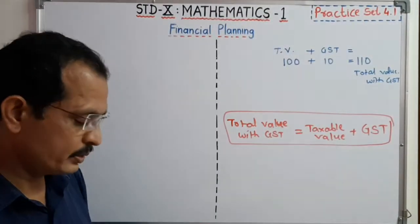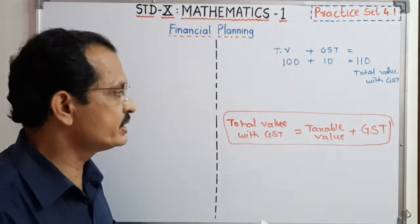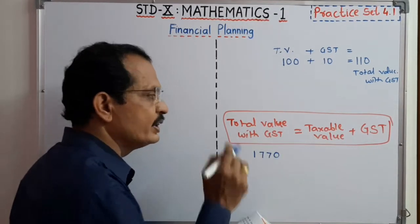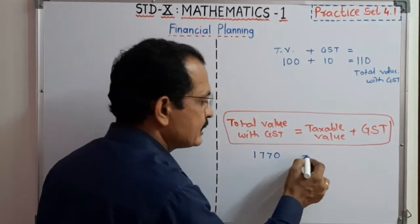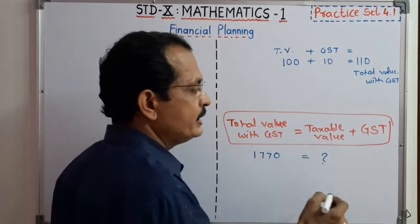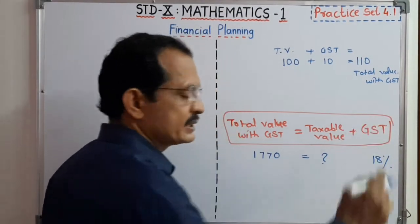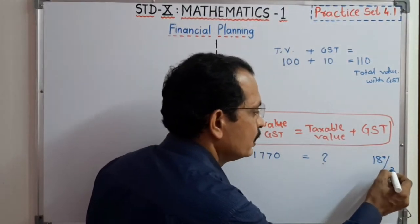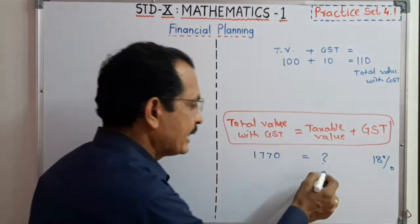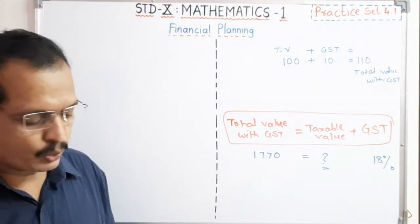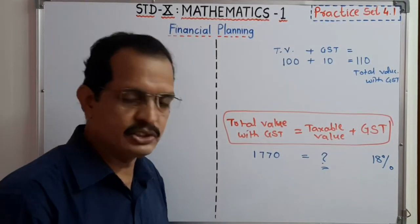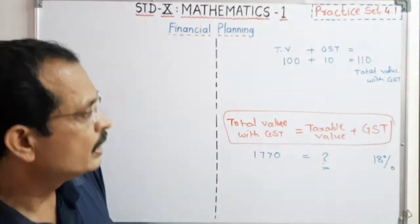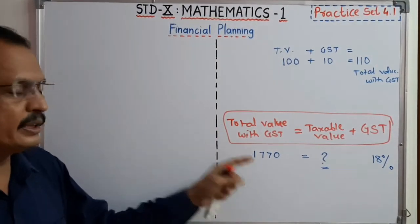What is given? The total value with GST is ₹1770, and we have to find the taxable value. The GST rate is 18%, and we have to find the taxable value, then CGST and SGST. All of you know that CGST and SGST will be the same amount. If you understand this, then it is very easy.